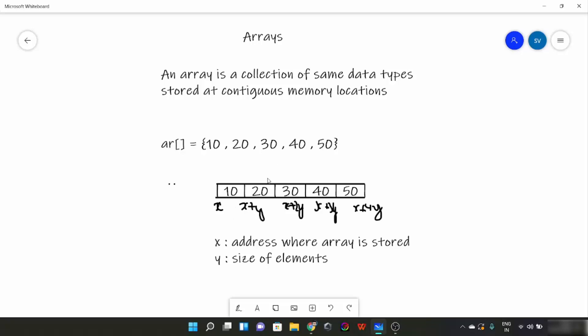And similarly, the next element would be stored at x plus 2y, and this goes on. Suppose there is one more element like 60, the size would be x plus 5y. For example, suppose x is 1000 here, and y would be 4 for integer.